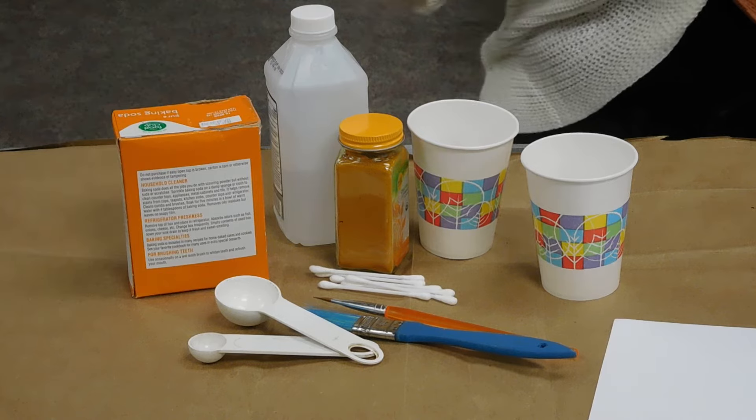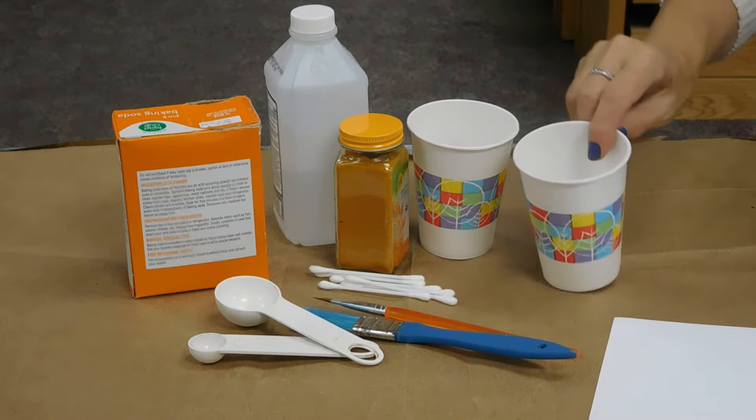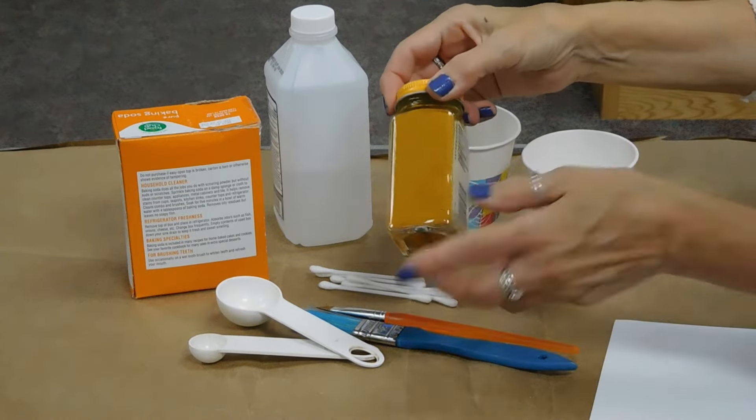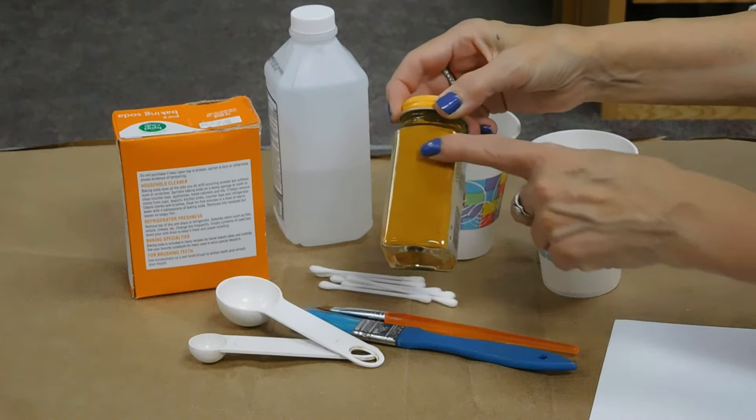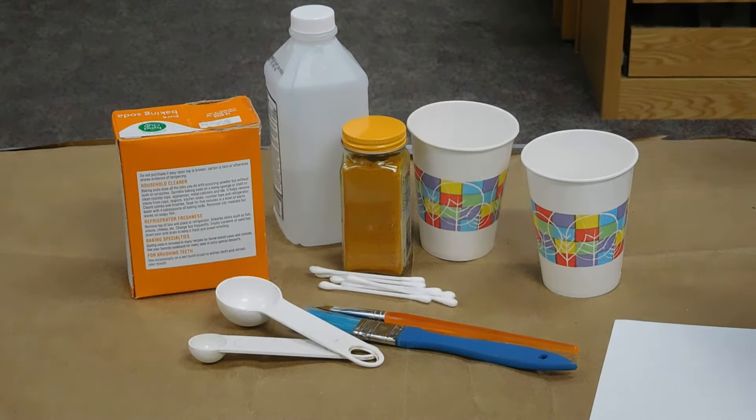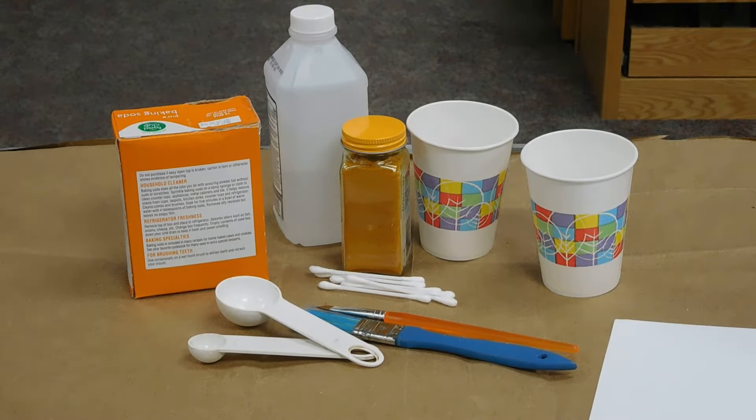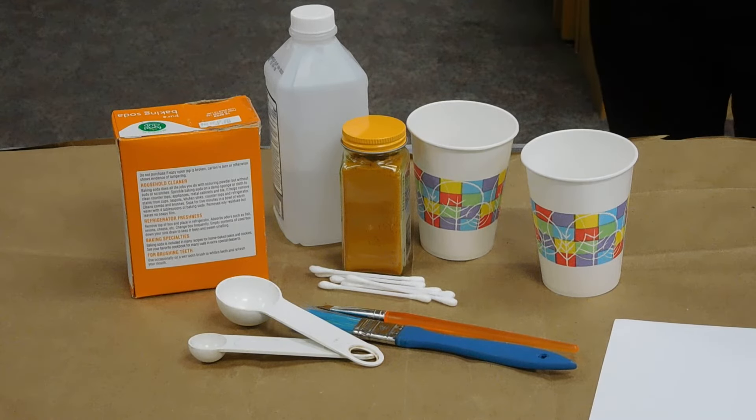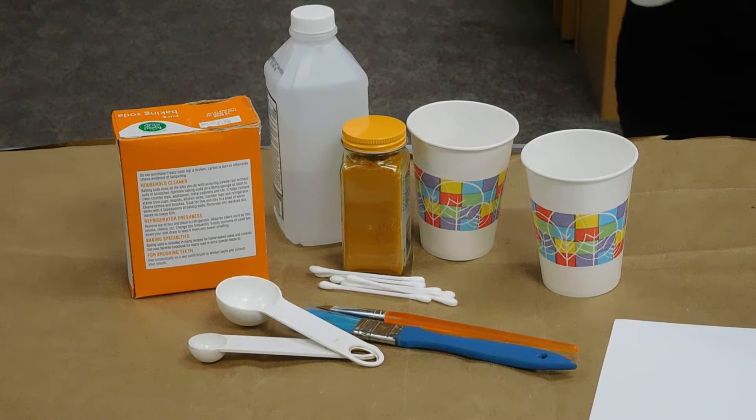Baking soda and water. I've got a tablespoon of water ready to go in this first cup. Turmeric and it is a spice. It's got a brilliant yellow color and it's got a characteristic spicy earthy scent. Rubbing alcohol and it's the same bottle of rubbing alcohol you've seen before.